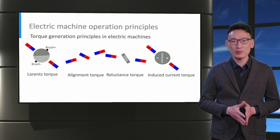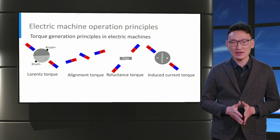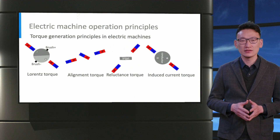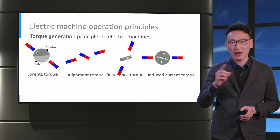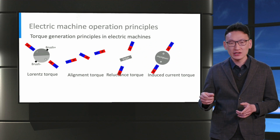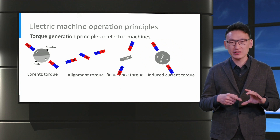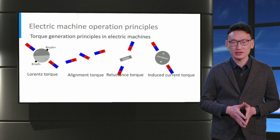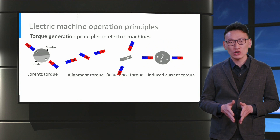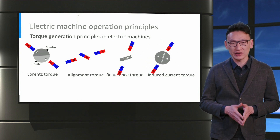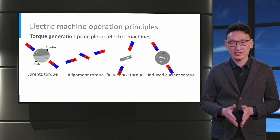The difference compared to the alignment torque is that the rotor poles are purely passive iron poles. The final principle is based on induced current, where the rotating magnetic field from the stator induces a current in the rotor, and the interaction of the induced current and the magnetic field produces torque in the motor. In order to have induced current, the rotor should rotate at asynchronous speed — that is, the rotor speed should be different from the synchronous speed.